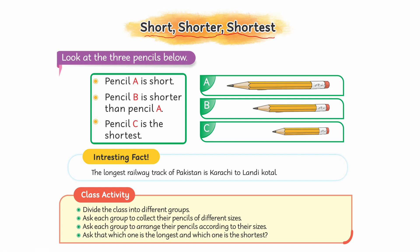ठीक है, तो अगर आप इसमें देखें तो हमारे पास तीन तरह की pencil दी गई है। अगर इनमें से देखें, ये pencil जो है ये सबसे छोटी नज़र आ रही है। इसका मतलब है ये वाली जो सबसे छोटी है वो तो Shortest होगी। ये क्या है — ये A pencil को आप कहेंगे ये Short है।